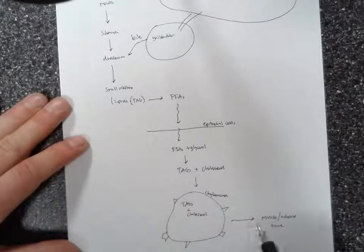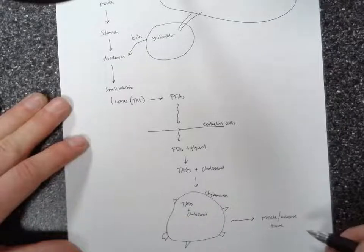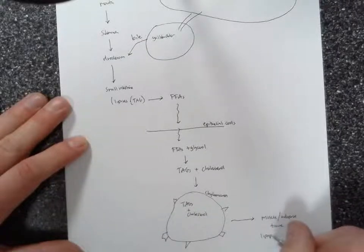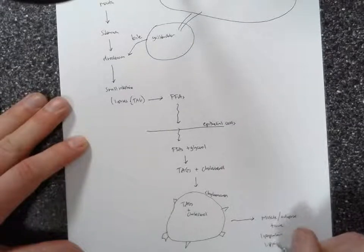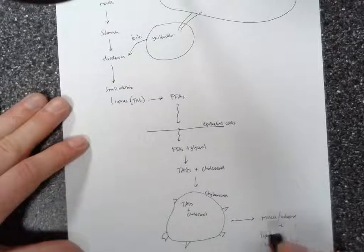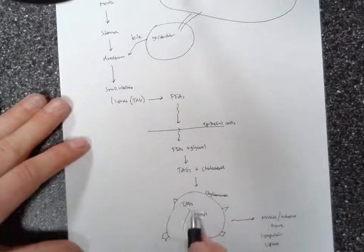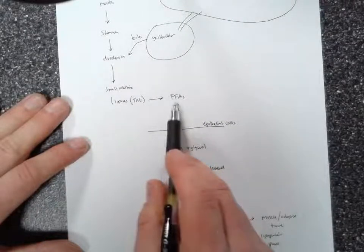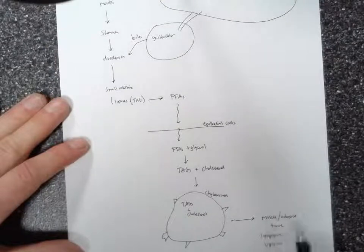Mainly the triacylglycerols are going to be pulled out by lipoprotein lipases. I'll write that down here. Lipoprotein lipases on the muscle and adipose tissue. And what that's going to do is break down these triacylglycerols into free fatty acids just like we saw up here. And then they can diffuse across the membrane of these tissues.